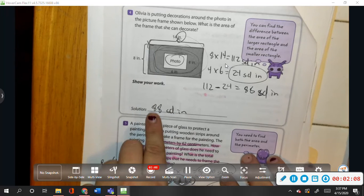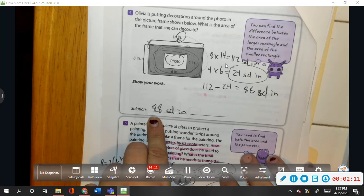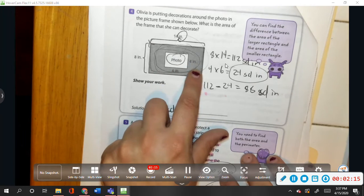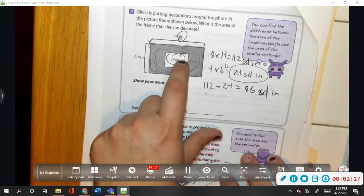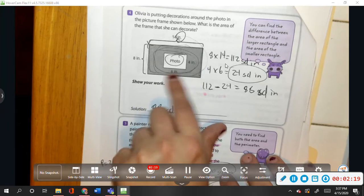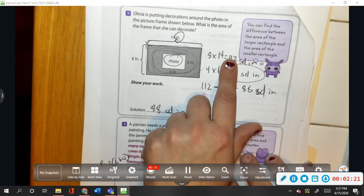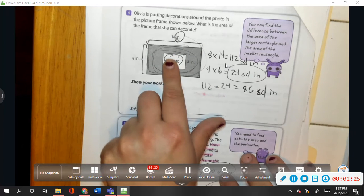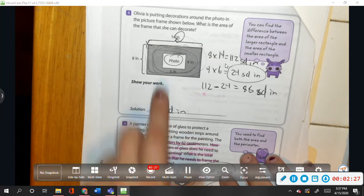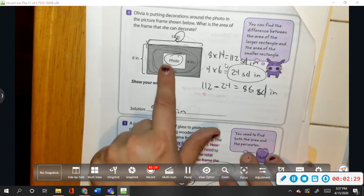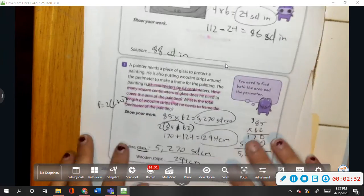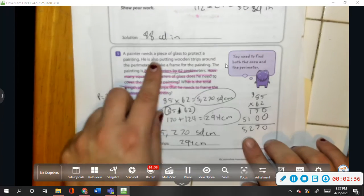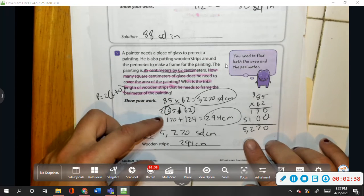Here's the back page. And this was just wanting the area that they could decorate. So if you did just the whole area, the 112, you were wrong. Because that photo is going to take up space too. So that only leaves them 88 square inches to decorate. And down here, we had to find both the area and the perimeter.